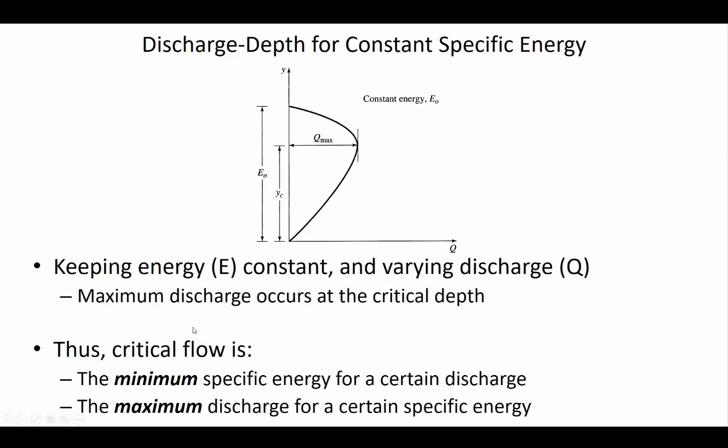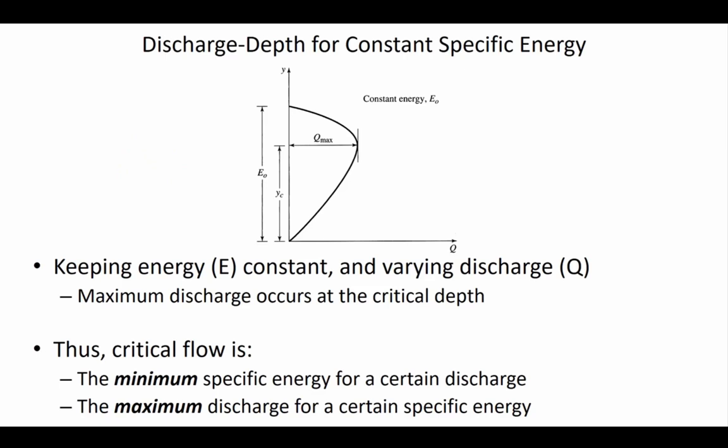Critical flow is either the minimum specific energy that will convey a certain flow rate, or you can think of it as the maximum discharge for a certain amount of specific energy — two sides of the same coin. If you only have a fixed amount of energy, the way that you would maximize discharge is to have the critical depth, and that's critical flow.